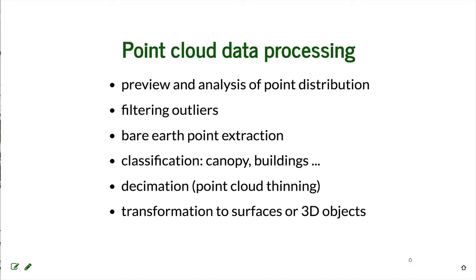It's also important for understanding potential artifacts and errors in point cloud data. We will briefly discuss filtering outliers, and in case we have sufficient data, bare earth point extraction. Another step is often classification of point cloud, if you don't have the data already classified. Then in preparation for transformation of point cloud data to a more structured representation, there is decimation or point cloud thinning, and finally transformation to surfaces or 3D objects.